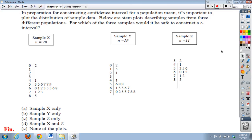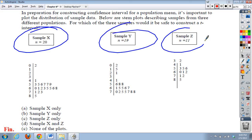And, the last problem. In preparation for constructing confidence intervals for a population mean, it's important to plot the distribution of sample data. Below are stem plots describing samples from three different populations. For which of the three samples would it be safe to construct a T interval? Okay. So, when we do mean problems, okay. Typically, I would say, you have to plot your data if you have less than 30 in your sample size. Okay. So, the first thing I would look at when considering these three different data sets are the sample sizes.